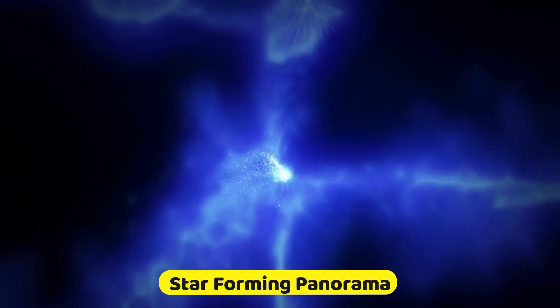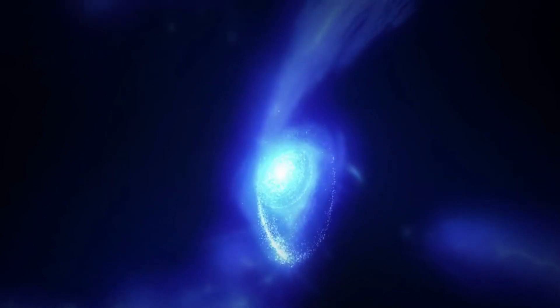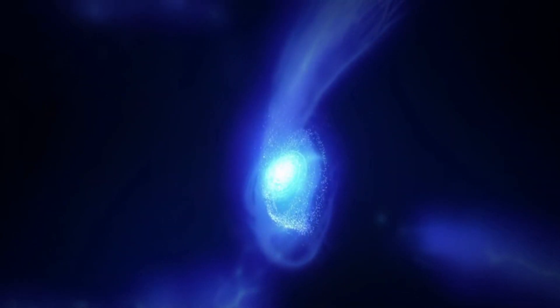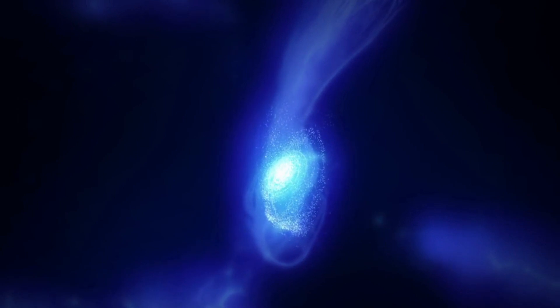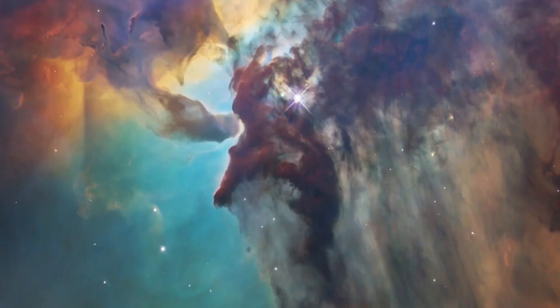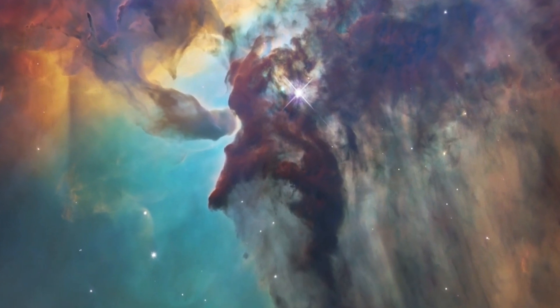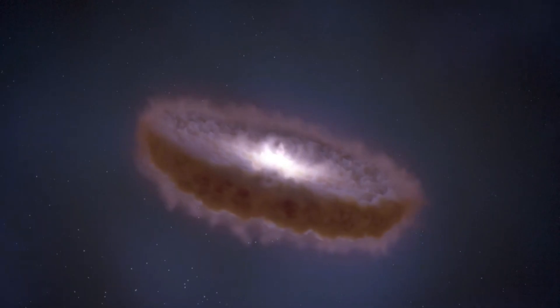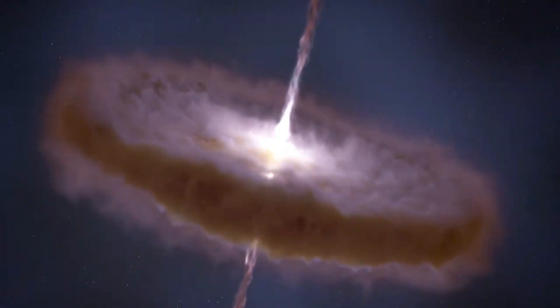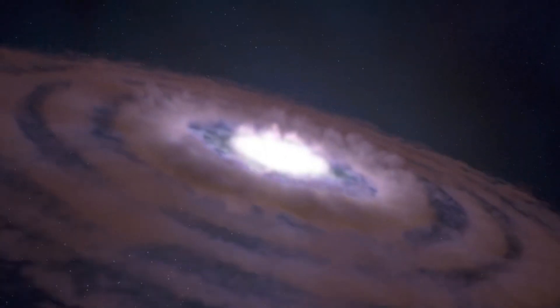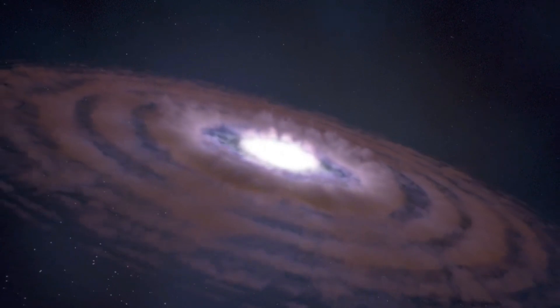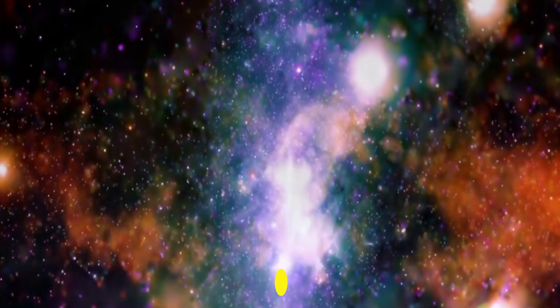Number 6. Star-forming panorama. Prepare to embark on an awe-inspiring journey to the mesmerizing realm of 30 Doradus, a nursery for stars like no other. Imagine being whisked away to a celestial spectacle, 170,000 light-years distant in the large Magellanic cloud. Brace yourself for a dazzling display of the universe's brightest and most colossal stars. As we unveil this cosmic canvas, you'll bear witness to the breathtaking beauty of a star-forming haven that truly defies imagination.